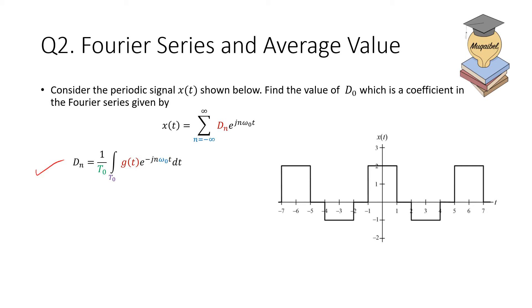Or if you want to do it formally, we start with the general definition of dₙ. We substitute for n equal to zero, so the exponent becomes one, and then we integrate over one period. What's the period here?